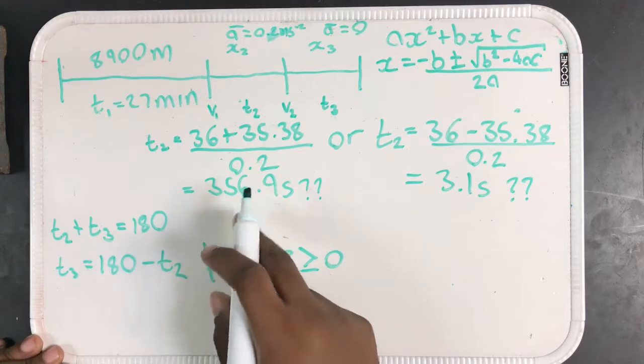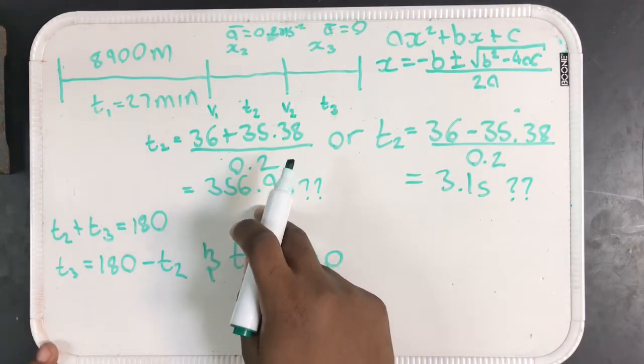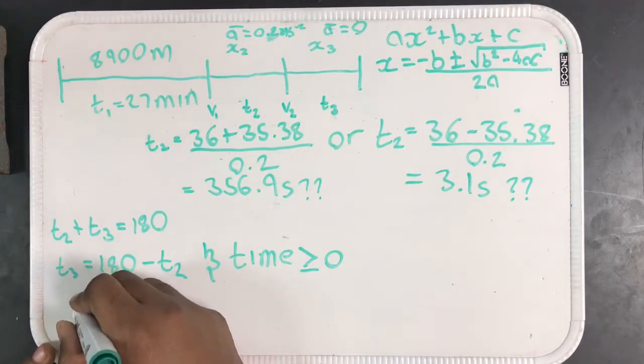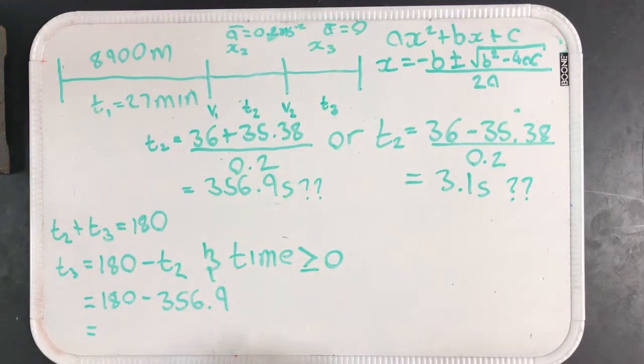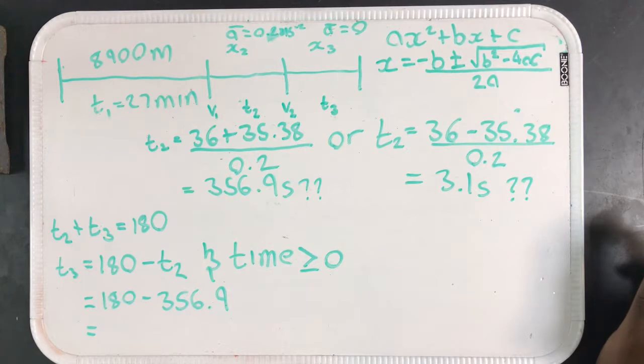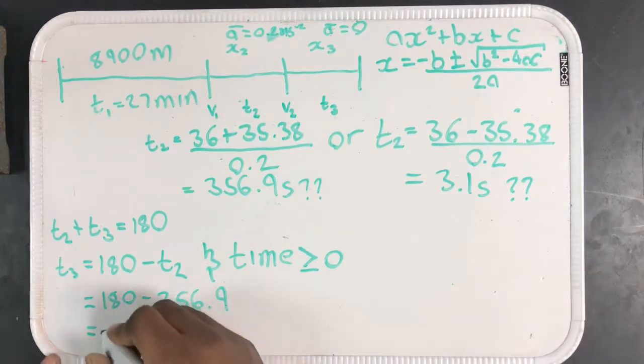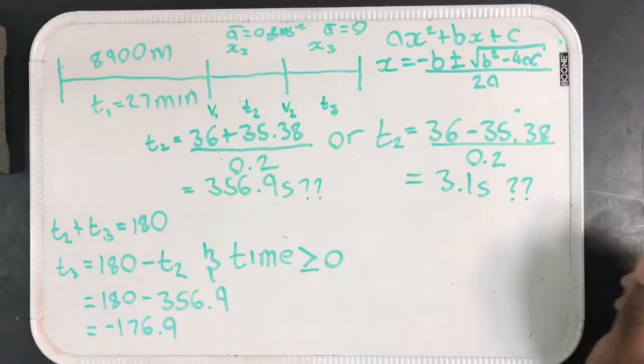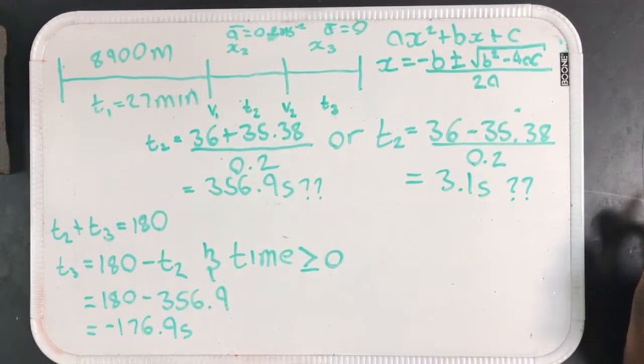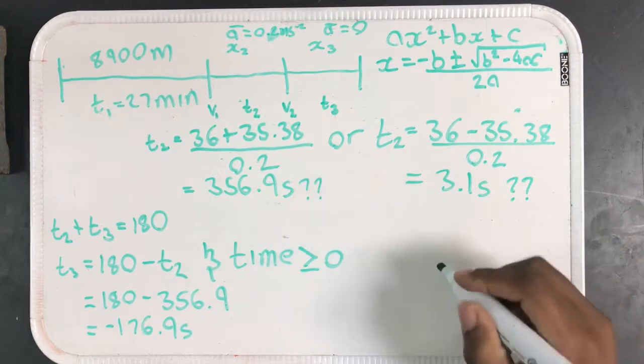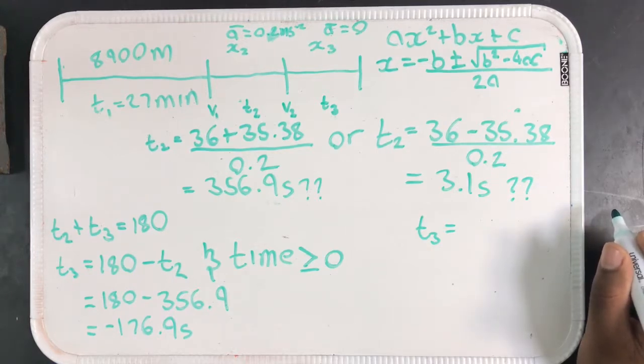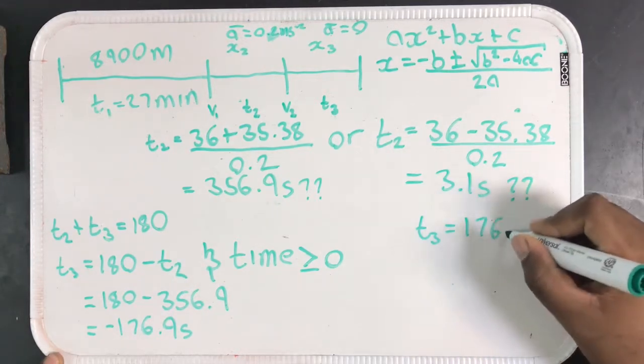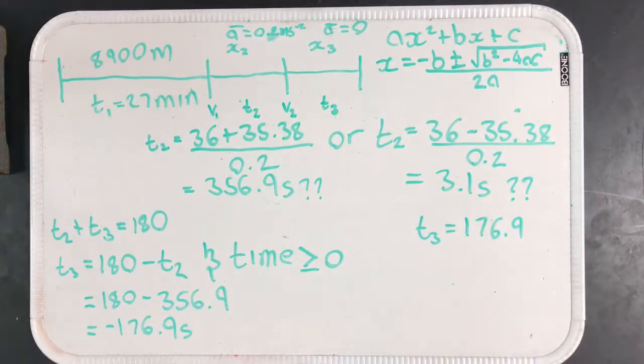If T2 equals 356.9 seconds, the only way that this can be possible is if T3 is negative. We get 180 minus 356.9, meaning that T3 has to be negative 176.9 seconds, which physically doesn't make any sense. However, if we use this, we find that T3 is actually equal to 180 minus 3.1 or 176.9 seconds.